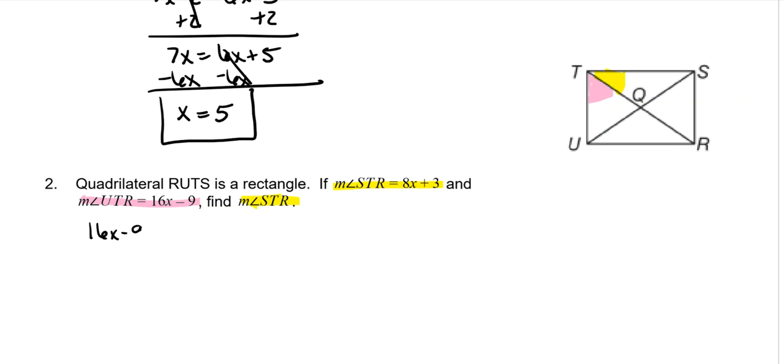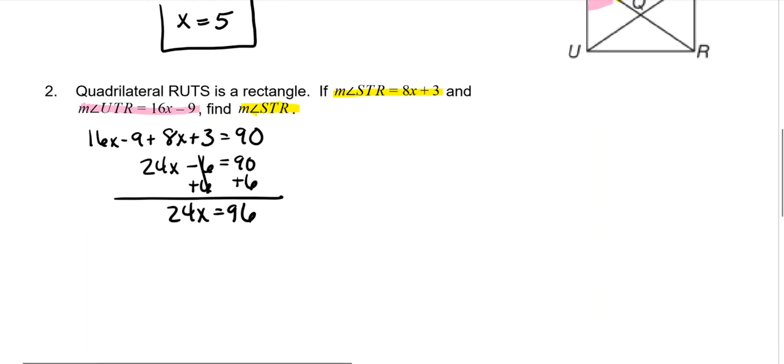16x plus 8x is 24x. Negative nine plus three is negative six. Add six to both sides. 24x is equal to 96. Divide both sides by 24. And x is four.